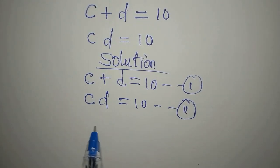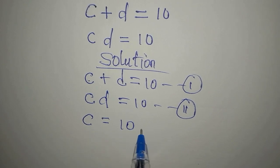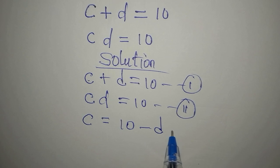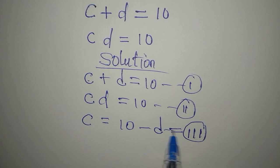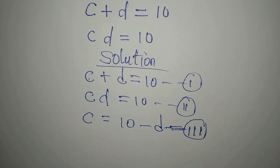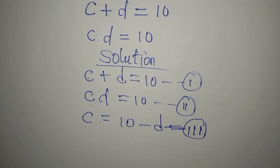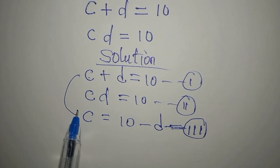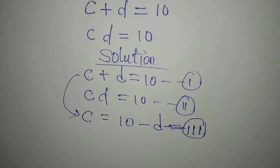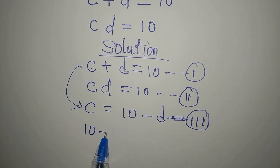What we will do is make c the subject in equation 1, so c equals 10 minus d — this becomes equation 3. From here, we can substitute equation 3 into equation 2, since equation 3 is formed from equation 1.